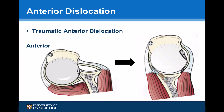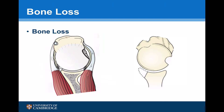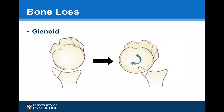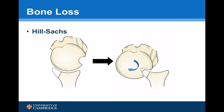Often this bone loss is relatively modest and if a stabilisation is required, a standard soft tissue procedure will work satisfactorily. However, in certain situations where the anterior glenoid bone loss is past a certain threshold, the soft tissue procedure itself will not be sufficient to stabilise the shoulder. This may be compromised further if there is a significant Hill-Sachs lesion that engages with the bone loss anteriorly.